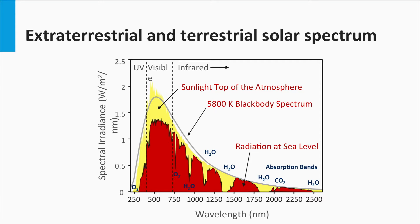In the infrared, oxygen, water, and carbon dioxide absorb light. They take big bites out of the spectrum. This means that the total power density arriving at the surface depends on the absorption path length of the light traveling through the atmosphere.